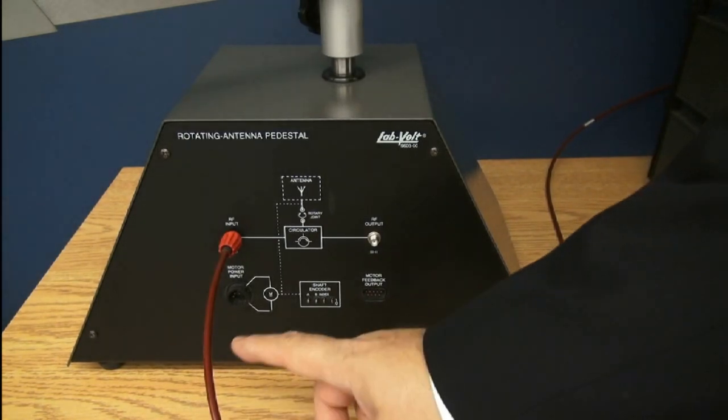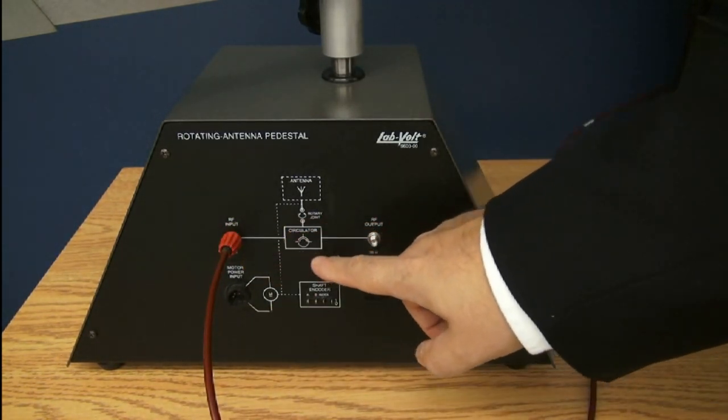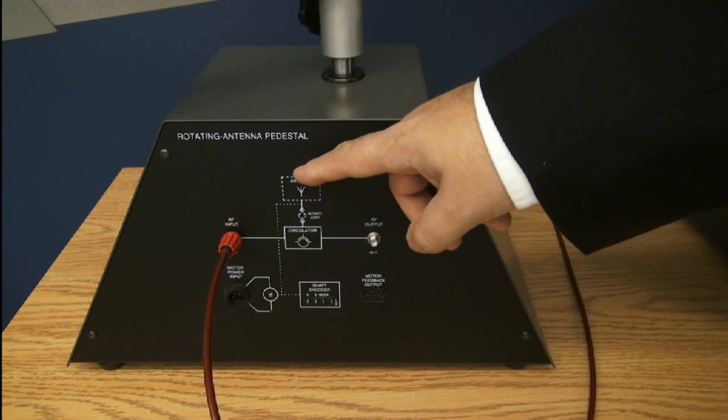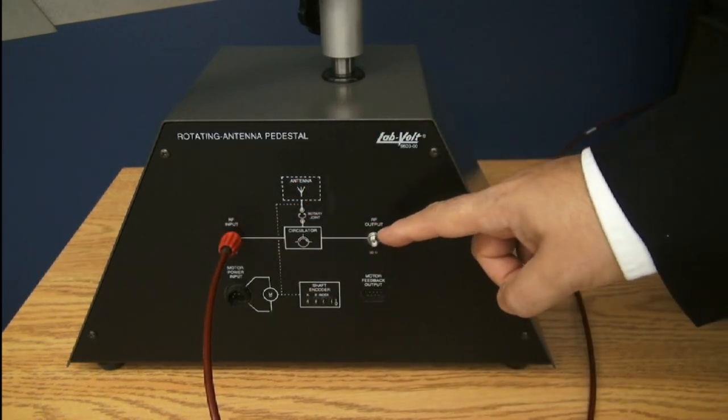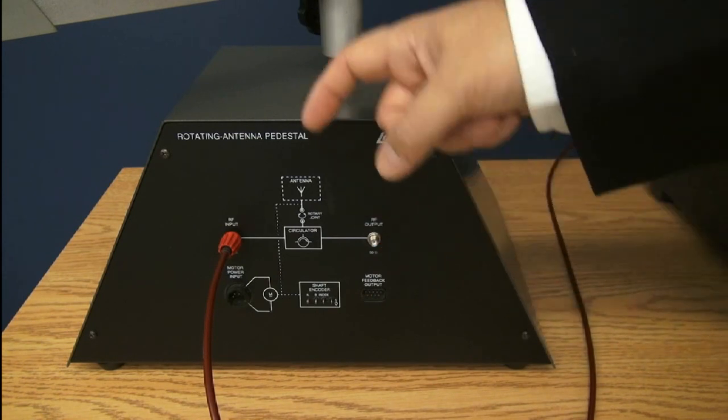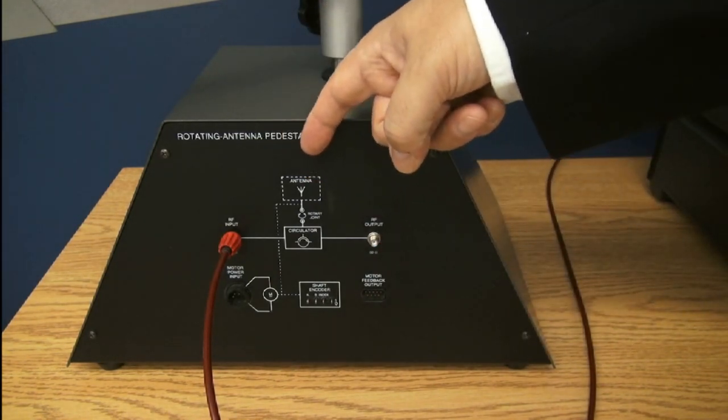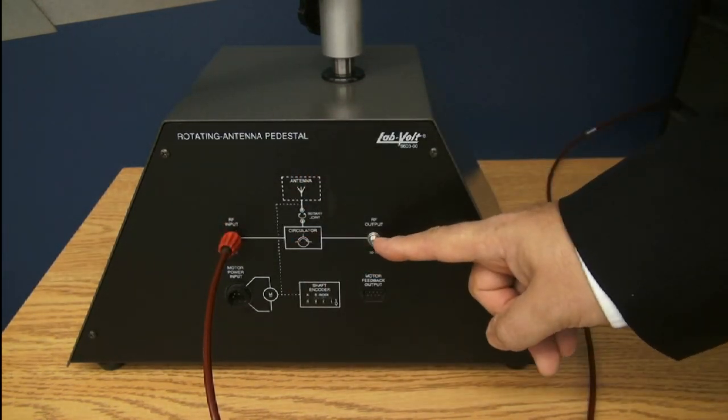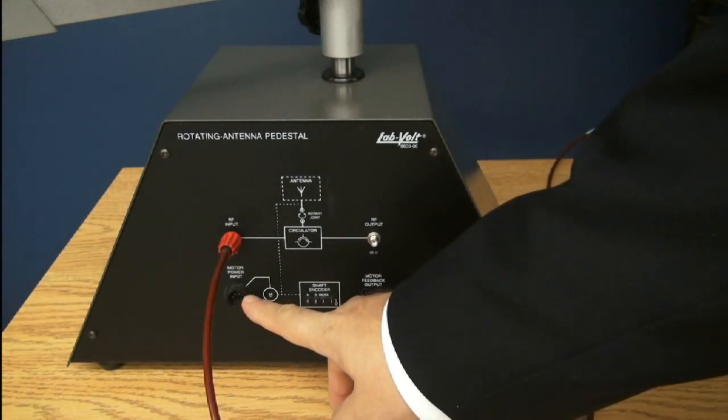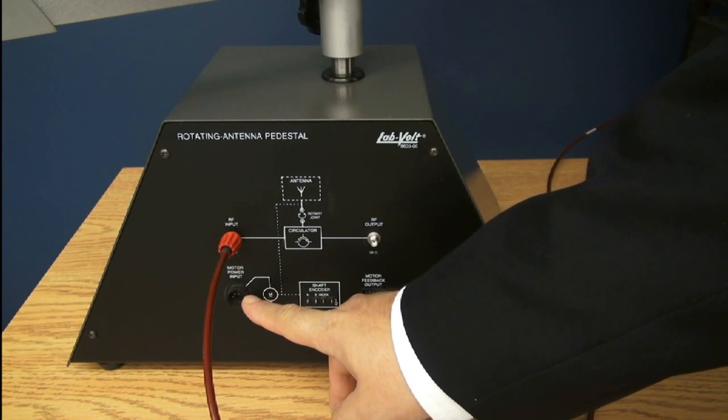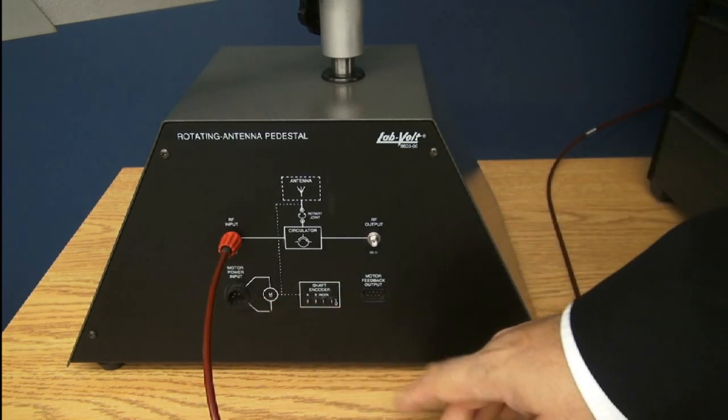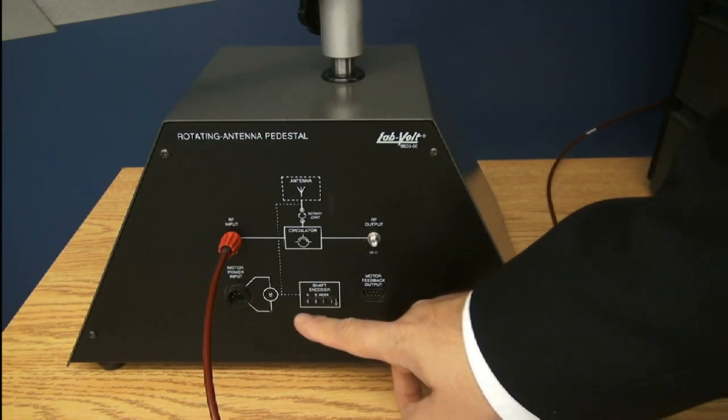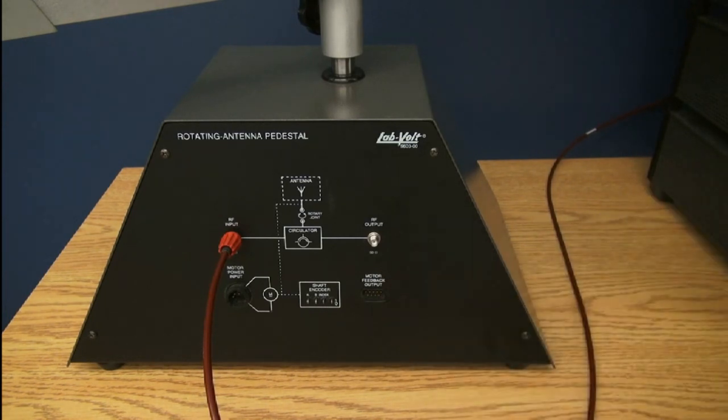So what is inside this rotating antenna pedestal? My pulses go into the RF input. I have a circulator that will send my RF input to the antenna through a rotary joint, but will prevent most of the input from bleeding into the output. The signals that come back, the echoes, will go through the circulator, won't go to my RF input, but will go to my RF output. I also have a motor power input here to change the direction of my antenna. I have shaft encoder outputs that I could read on the oscilloscope if I want to look into those details, but mostly I will use the motor feedback output connected directly to the controller.